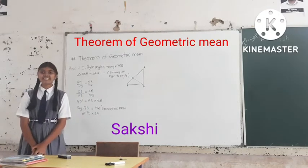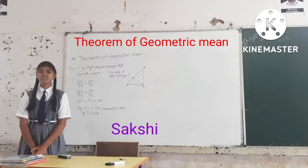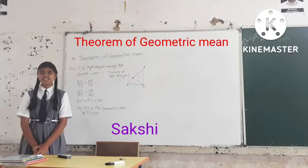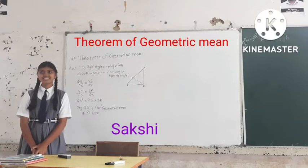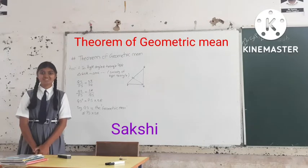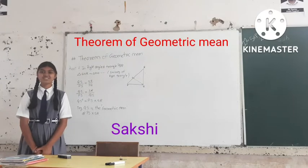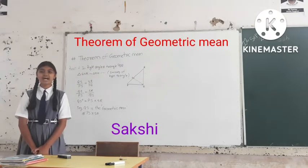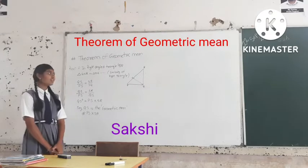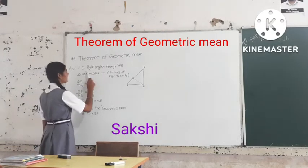Today, in a right angle triangle, the perpendicular segment to the hypotenuse from the opposite vertex — this is the geometric mean between the segments into which the hypotenuse is divided. So, it is the Geometric Mean theorem.